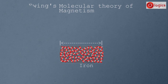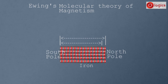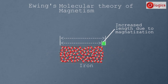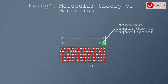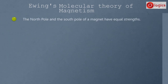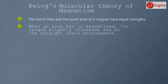This theory also explains why the length of an iron bar increases after magnetization. Before magnetization, molecules are irregularly placed and compressed along the length. After magnetization, molecules align one after another in long straight chains, and due to this regular placement the length increases. We can conclude that when an iron bar is magnetized, its length slightly increases due to the straight chain arrangement.